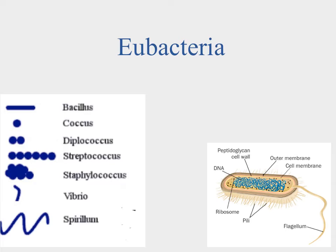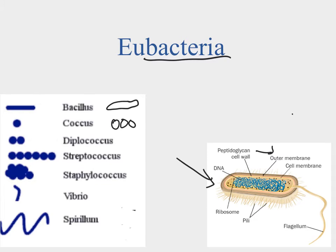The eubacteria, or true bacteria, are also prokaryotic cells. They have an outer membrane and a cell membrane but don't have any organelles inside the cell, so the DNA is just kind of there and hangs out. This is the bacteria we're most familiar with, and it gets its name based on its shape. Our big three shapes are the bacillus — rod-shaped cells; the coccus — circular shapes; and you can have a diplococcus, a streptococcus chain, or a staphylococcus cluster.